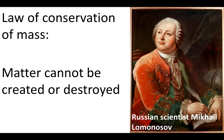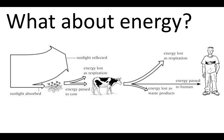Because energy is stored in matter, energy also cannot be created or destroyed — it can only be transferred. For example, energy from the sun is converted into glucose by plants. Cows eat those plants and convert the glucose into ATP. That ATP is used to build muscles and proteins. Then we eat the cows and convert that protein back into ATP, which we use to grow, move, and so on. The energy you get from a cheeseburger is really energy from the sun — it's just been converted many times over.